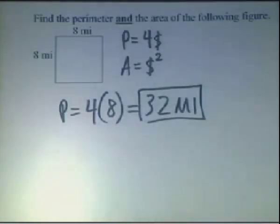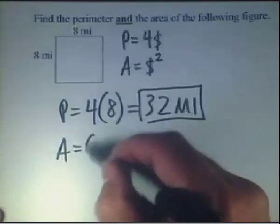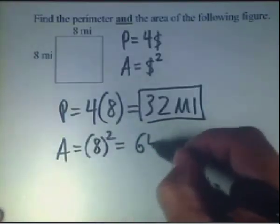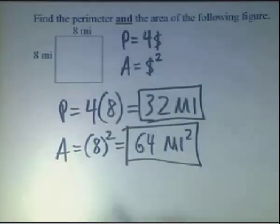The area for this is equal to the side squared. So we'll take 8 and square that to get 64 square miles. And this completes our problem for the square.